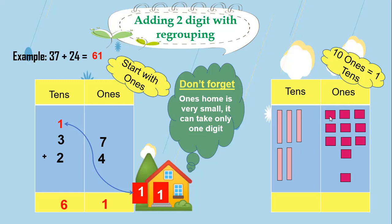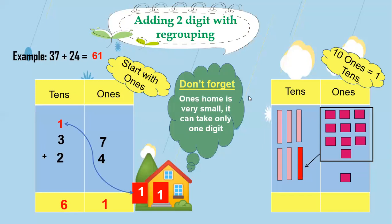We will count the tens and ones. We cancel 1, 2, 3, 4, 5, 6, 7, 8, 9, 10 — here we have 10 small squares representing ones. So we cancel the 10 small squares and they become 1 ten. Now we count: 10, 20, 30, 40, 50, 60 — so we have 6 in tens, and we have only 1 in ones, because the 10 ones became 1 ten. So we don't count them.